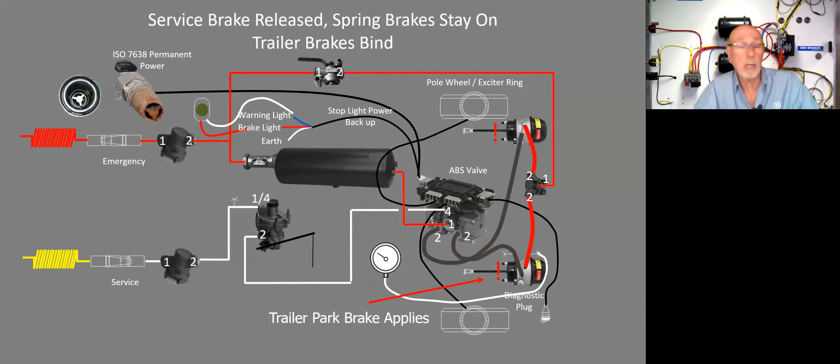Service brakes come on. But when we release the service brakes, the spring brakes stay on because the trailer's own park brakes have applied. Would the driver pick it up? Well, probably not. Because it would not necessarily be a full application. We've just got low pressure. Not no pressure. We've just got low pressure at the rear of the spring brakes. What a difference there. So the brakes would start binding.